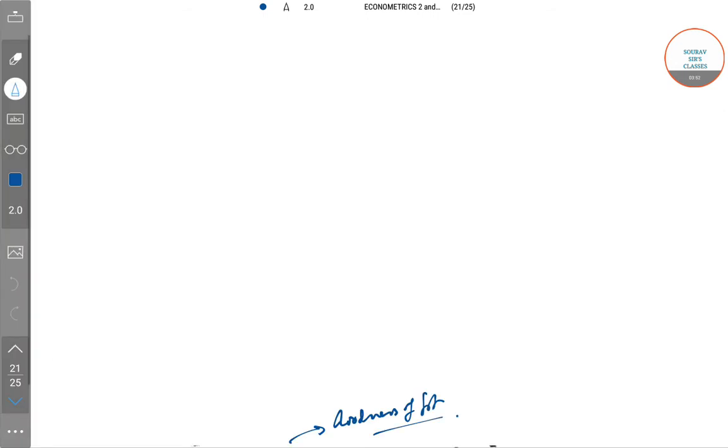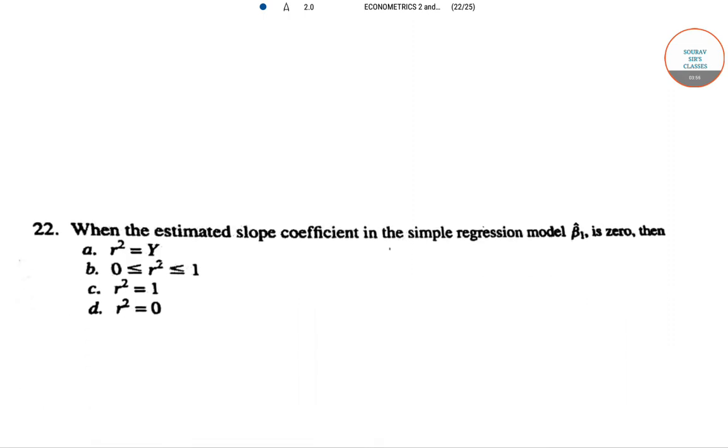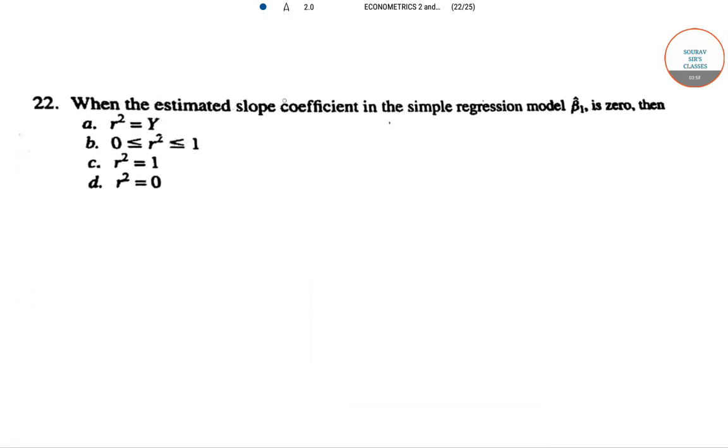Question 22: when the estimated slope coefficient in the simple regression model β̂₁ is 0, then R² is also 0. The model is Y = α + β̂₂Xᵢ + εᵢ. We can say the correlation coefficient is 0, so there is no structural relation between β₁ and Yᵢ.